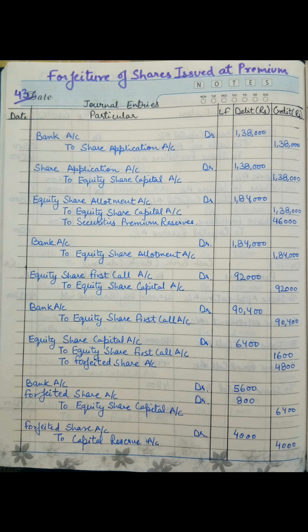Next is the receipt of allotment money: Bank Account debit to Equity Share Allotment Account. As it is fully paid, 1,84,000 has been received by the company. Now for the first call: Equity Share First Call Account debit to Equity Share Capital Account. On the first call, 2 rupees were asked, so 2 rupees into 46,000 gives 92,000.